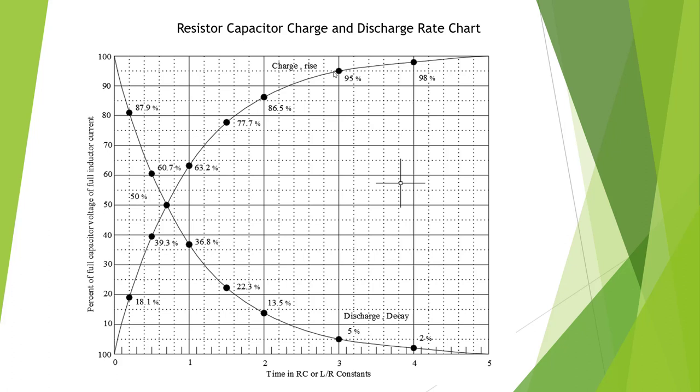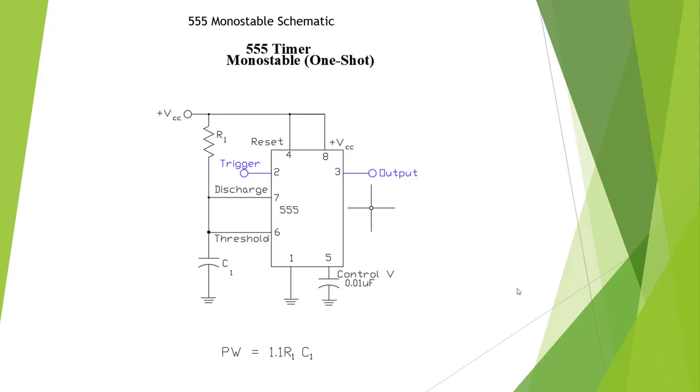So the second time constant would be 86.5%, 95%, 98%, and we start approaching 100%. As we discharge, we're going to start at 100 or close to it and go down to 36.8%, 13.5%, 5%, 2%, and close to 0. We're going to consider that a capacitor is fully charged in five time constants.